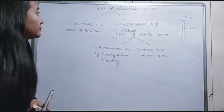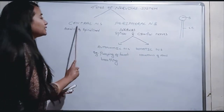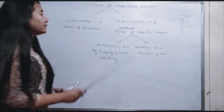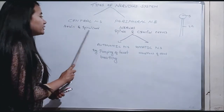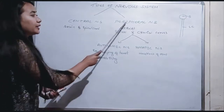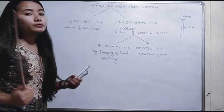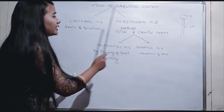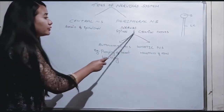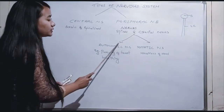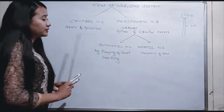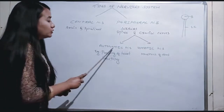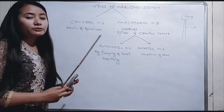To summarize the types of nervous system: the Central Nervous System includes the brain and spinal cord. The Peripheral Nervous System consists of nerves — spinal nerves and cranial nerves. The Peripheral Nervous System is also divided into the Autonomic Nervous System and the Somatic Nervous System.